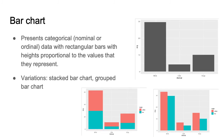Bar charts are effective at communicating data because we tend to be good at comparing lengths. They present categorical data with rectangular bars with heights proportional to the values that they represent. Some variations include stacked bar charts where different parts of a category are stacked on top in a single bar, or grouped bar charts where different parts of a category are represented in side-by-side but separate bars.